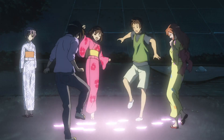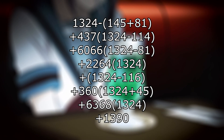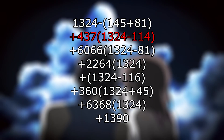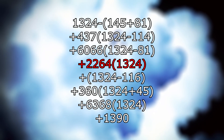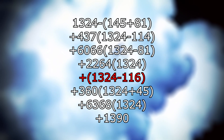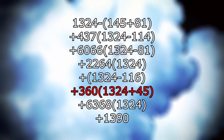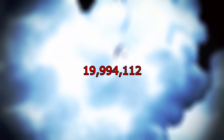The final loop, episode 8, clocks in at the special 1,390 seconds, as it lacks the end credits. The final function looks like this: our first loop, 437 without goldfish or part-time work, 6,066 without part-time, our final 2,264 of episode 1, the second one without a bond festival, 360 with multiple part-time, 6,368 normal loops, and our finale — for a grand total of 19,994,112 seconds, or 231.4 days long.